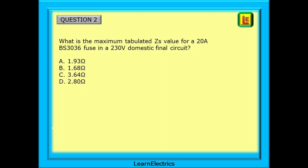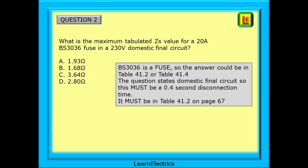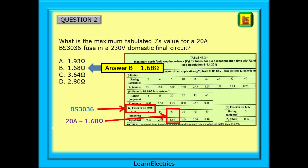Let's have an exam-style question on these tables. What is the maximum tabulated ZS value for a 20 amp BS 3036 fuse in a 230 volt domestic final circuit? BS 3036 is a fuse, so the answer could be in Table 41.2 or Table 41.4. The question states domestic final circuit, so this must be a 0.4 second disconnection time. Therefore the answer must be in Table 41.2 on page 67. Find BS 3036 fuses on page 67, find the entry for 20 amps, and read off the maximum ZS. The answer we choose should be answer B — 1.68 ohms.